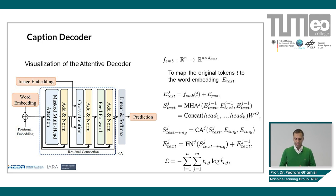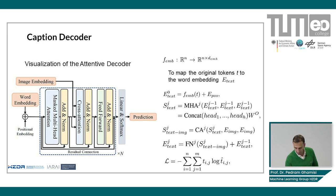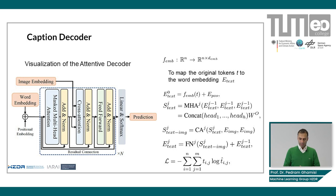After the final step, we perform linear normalization followed by softmax to produce the predicted change captions. The whole network is penalized by minimizing the cross-entropy loss between the predicted change captions and the input text tokens.